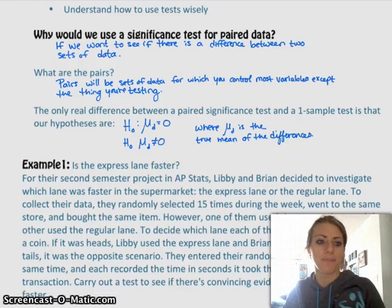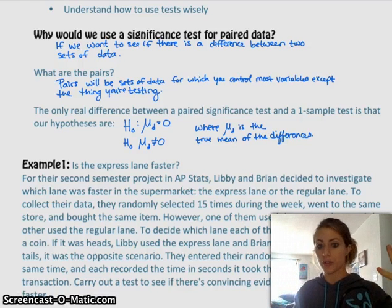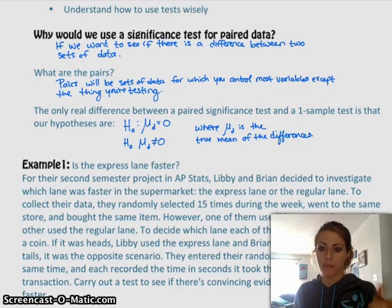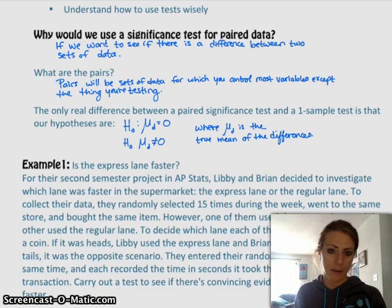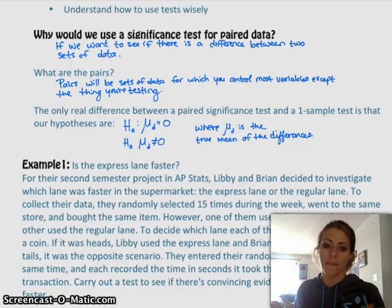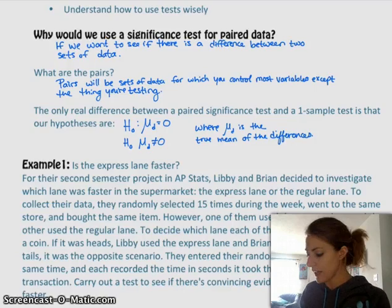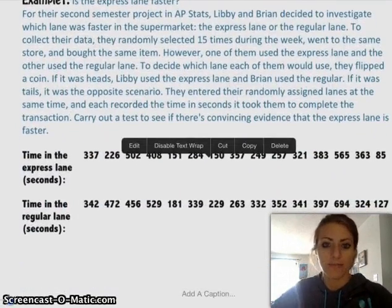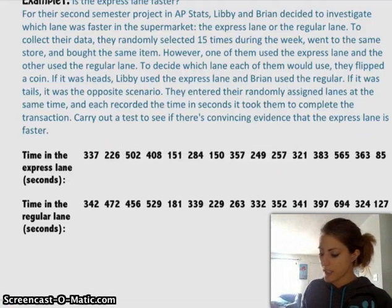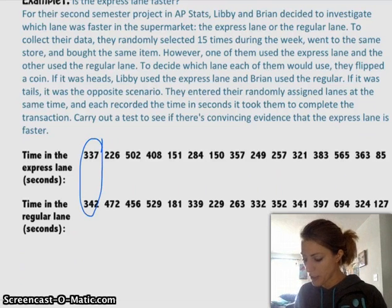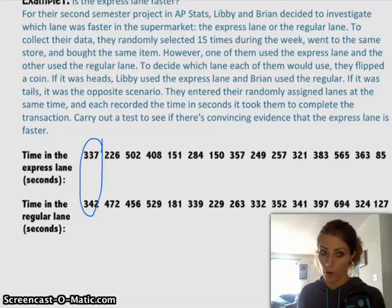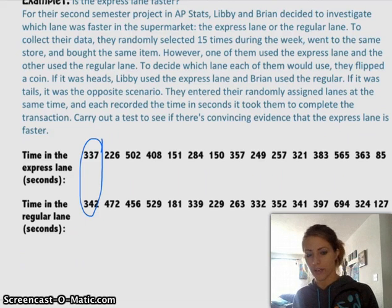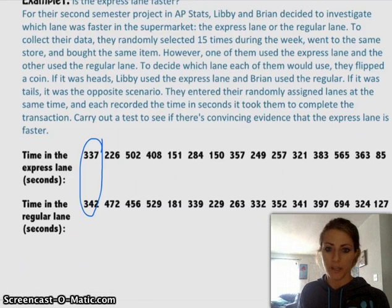So we're going to look at an example. Basically, this example is all about a grocery store — is the express lane faster? So you have two students, Libby and Brian, and they decided to randomly select 15 times during the week. They went to the store, bought the exact same item, and then one of them used the express lane and one used the regular lane. They flipped a coin to decide who was going to be in what lane, then recorded their data to see if there's a difference between the two lanes. Each set of data — so 337 and 342 — were at the same time, same item, so everything else is controlled except one is the express lane and one is the regular lane.